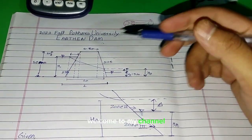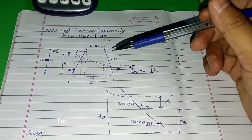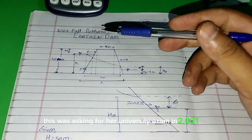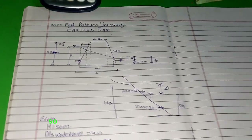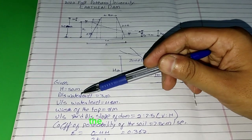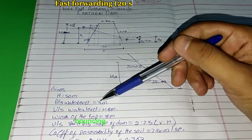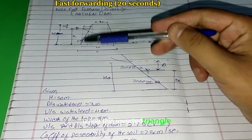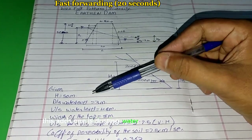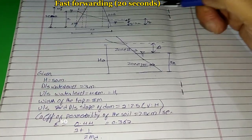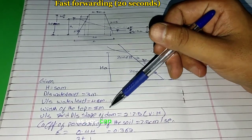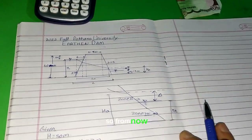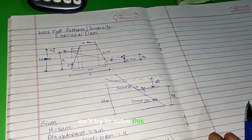Hello students, welcome to my channel. In this video I am going to be solving this numerical for you. This was asked in Pohar University exam in 2021 fall. I have written down all the given data here: the height is 50 meters, the downstream water level is 3 meters, the upstream water level is 48 meters, the top of the tank is 8 meters, and all other data is as given in the question.